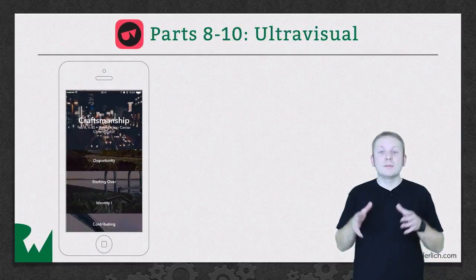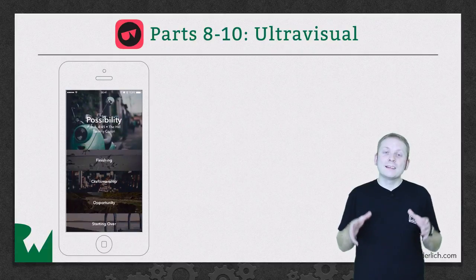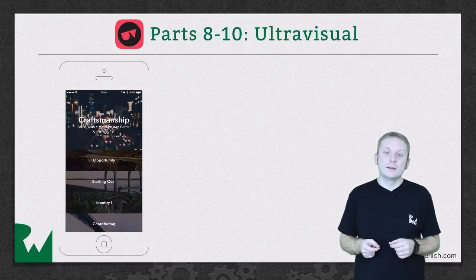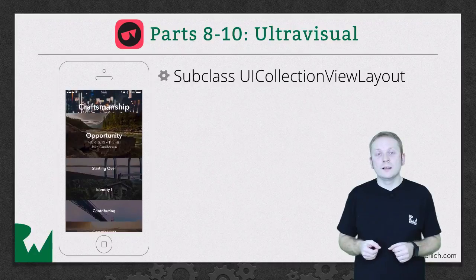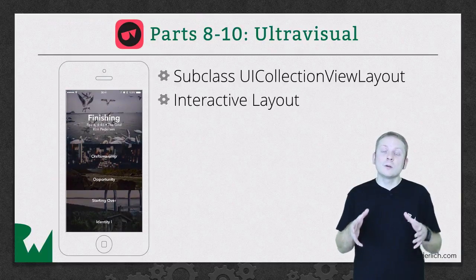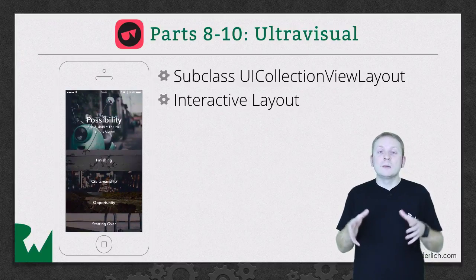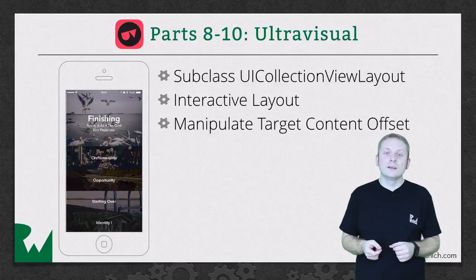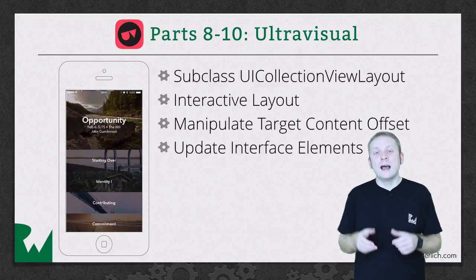In parts eight through ten, we're going to step things up a gear and you're going to build a layout influenced by the popular Ultra Visual app. You'll bring together everything learned up to this point, as well as introducing more advanced topics. Starting again with a UICollectionViewLayout subclass for maximum flexibility, you'll build your first truly interactive layout, where the state and visual appearance is directly affected by the user's interaction. You'll learn how to manipulate the target content offset to achieve a snapping effect, and how to create dependencies between the cell's visual interface elements and the current layout state.